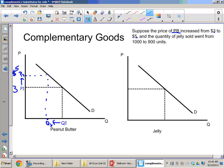And the quantity sold of jelly went from one thousand down to nine hundred units. So when the price of peanut butter went up, less peanut butter was sold. We also saw that at the same time, less jelly was sold. So we have Q1 of one thousand down to Q2 of nine hundred. As we see, they went in the same direction. The quantities went in the same direction. That means these are complementary goods.